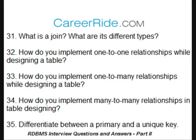How do you implement one-to-one relationships while designing a table? One-to-one relationships are implemented mostly as one and sometimes as two tables with primary and foreign key relationships. One-to-many relationships are implemented by splitting the data into two tables which have primary and foreign key relationships. Many-to-many relationships are implemented through a junction table which has keys from both the tables, forming a composite primary key.